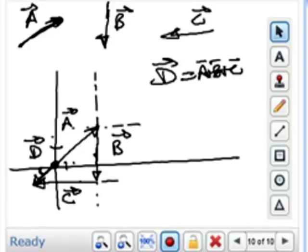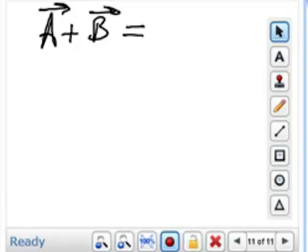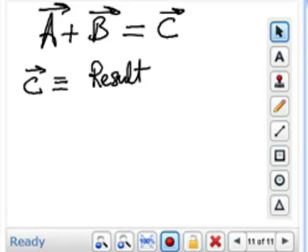Now let's do some jargon here. Remember, if I have a vector A and I add it to a vector B, any vector, and I want to define this vector sum by another vector, let's say C. This vector C is defined as what we call a resultant vector. It's the result of adding all the other vectors.